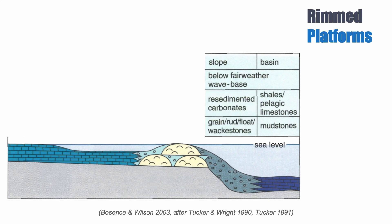The slope is a bit more complicated because we have a lot of re-sedimented carbonates coming from the reef where the wave action is so strong. The types of facies that you can expect are grainstone, rudstone, floatstone, and even some wackstone. Mudstones are less common, although not impossible of course.